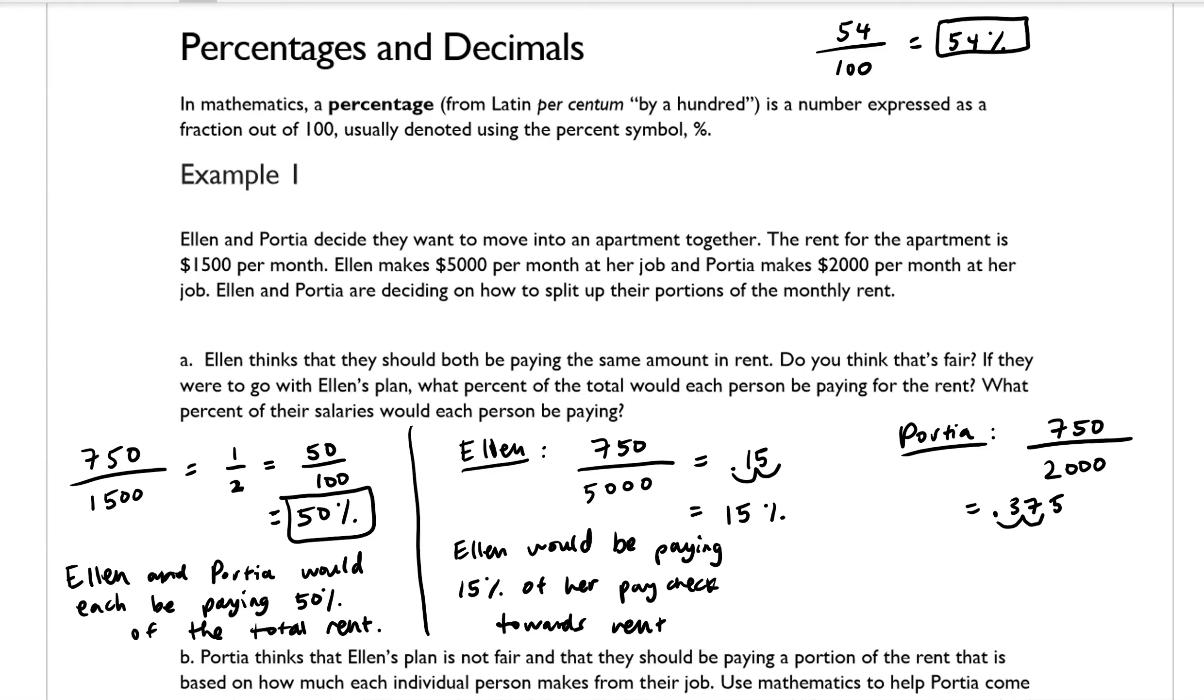And if you wanted to convert that to a percentage, you would move the decimal place over two places to the right. So we have 37.5%. So Portia would be paying 37.5% of her paycheck towards rent.